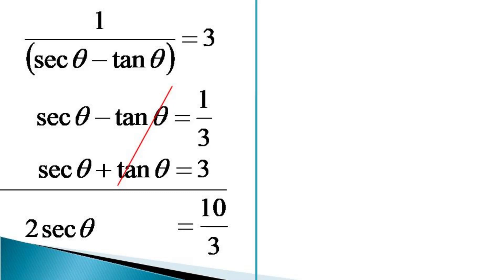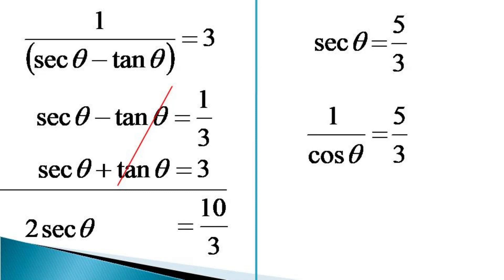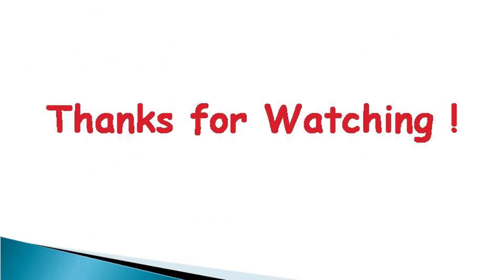Now, the value of sec θ comes out to be equal to 5 by 3. Since sec θ equals 1 by cos θ, we have 1 by cos θ equal to 5 by 3. Taking the reciprocal of both sides, we get the value of cos θ as 3 by 5, which was the value desired to be evaluated. Thanks for watching.